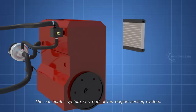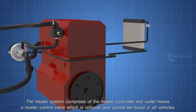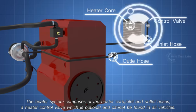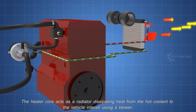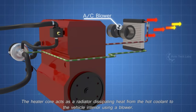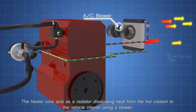The car heater system is a part of the engine cooling system. The heater system comprises of the heater core, inlet and outlet hoses, a heater control valve which is optional and cannot be found in all vehicles. The heater core acts as a radiator, dissipating heat from the hot coolant to the vehicle interior using a blower.